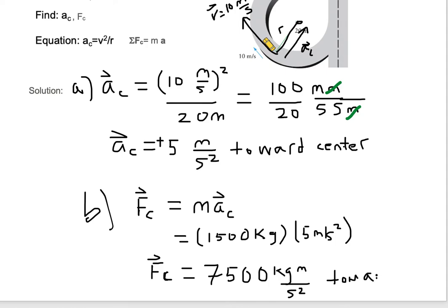Or you can erase the kilogram meters per second squared and put it as newtons. Remember, we define a Newton as a kilogram meter per second squared.